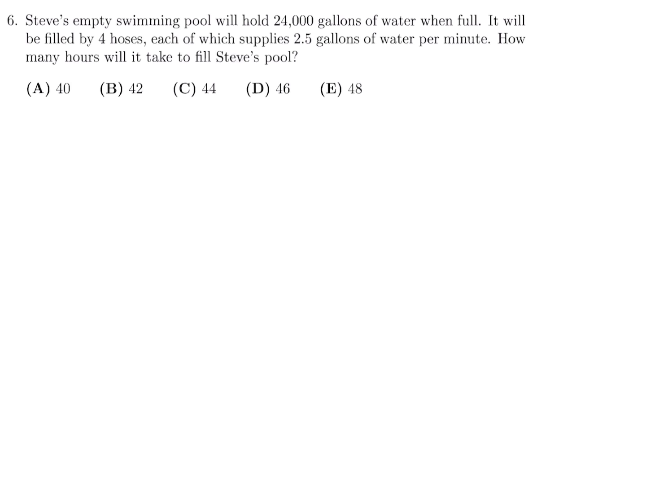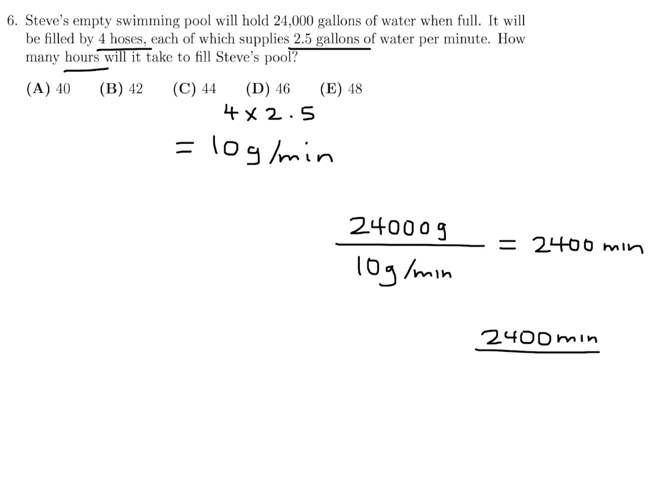Steve's empty swimming pool will hold 24,000 gallons of water when full. It will be filled by four hoses, each of which supplies 2.5 gallons of water per minute. How many hours will it take to fill Steve's pool? 10 gallons per minute is how much water will go in, because it's four hoses and each of them is 2.5. So you have to multiply 4 times 2.5 to get that 10. And then 24,000 gallons, therefore, divided by 10 gallons per minute will give me the amount of time. And this is 2,400 minutes. But they want it in hours, so we have to divide 2,400 minutes by 60 minutes. And if you do, you get 40 hours.